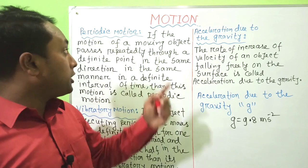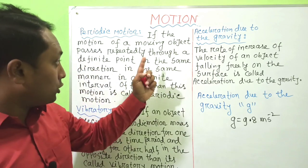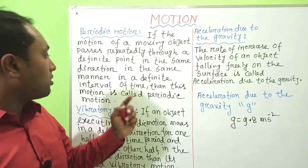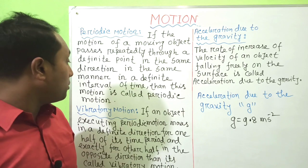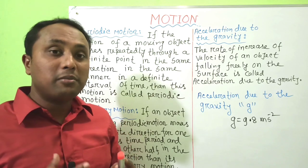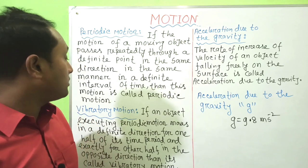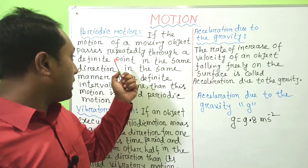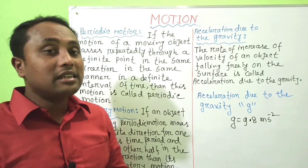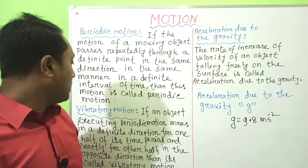The next definition is Periodic Motion. If the motion of a moving object passes repeatedly through a definite point in the same direction and in the same manner at a definite interval of time, then this motion is called periodic motion. An object's motion is periodic if it satisfies two requirements: it must pass a point from the same direction and in the same time interval.